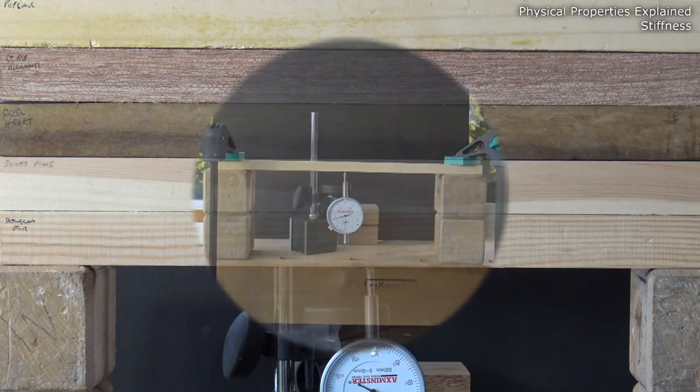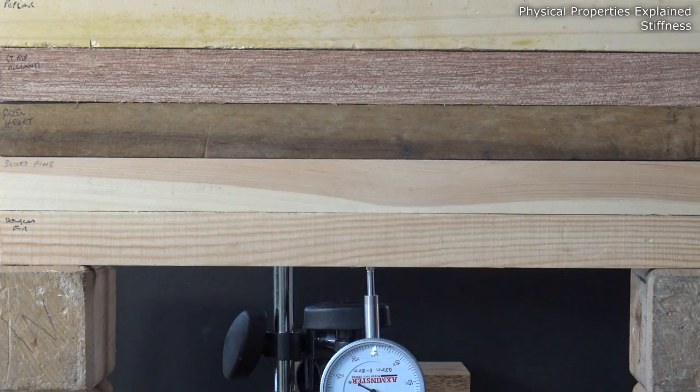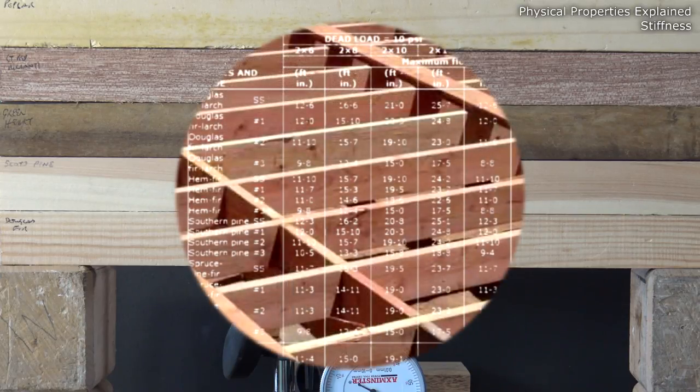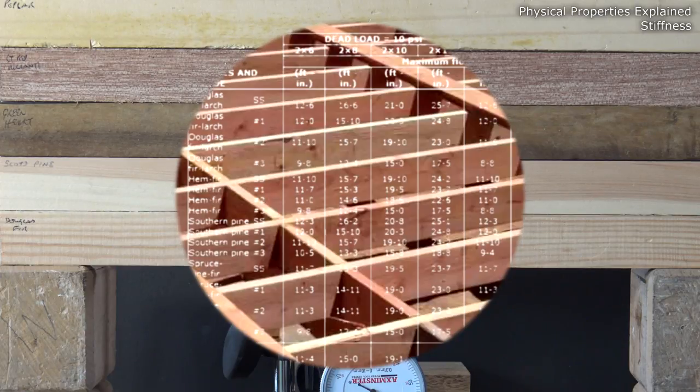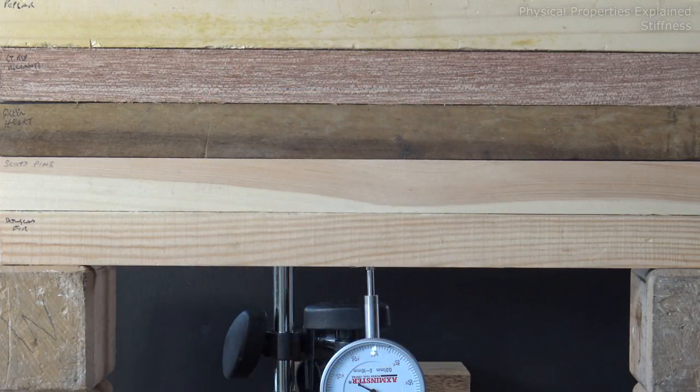One example of where stiffness is useful is in the specification of the joists for a floor. If they need to span quite a distance, and you don't want the floor to become springy, then you'll go for a stiffer wood.